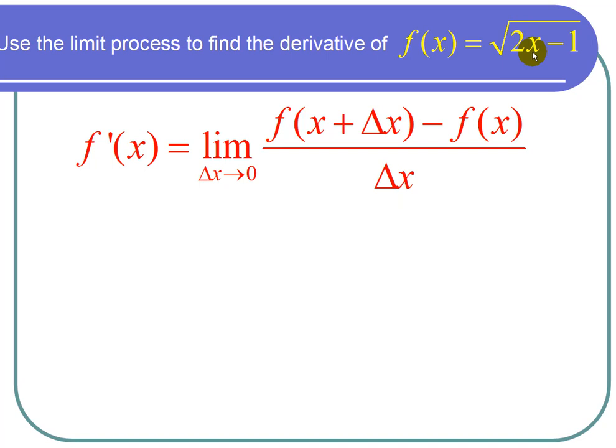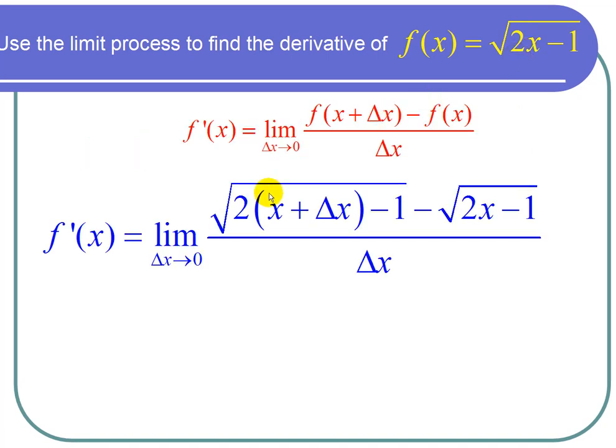And what I get is the limit as delta x approaches 0 of the square root of 2 times, and here's our x plus delta x minus 1, and then I subtract f of x, which is root 2x minus 1, divided by delta x.